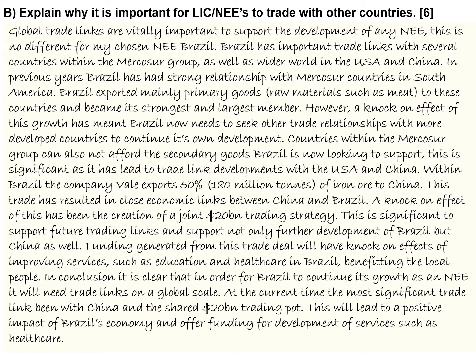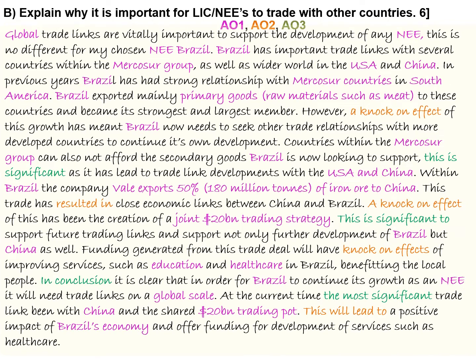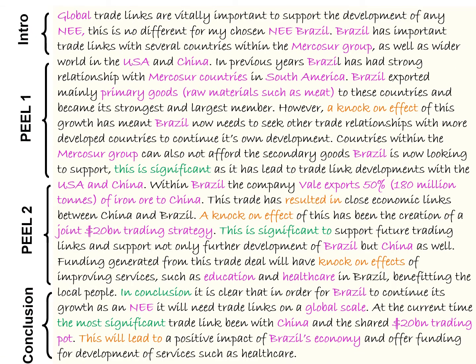In conclusion, it's clear that in order for Brazil to continue its growth as an NEE, it will need trade links on a global scale. At the current time, the most significant trade link is between Brazil and China — the shared 20 billion pound trading pot — which will lead to a positive impact on Brazil's economy and offer funding for development of services such as healthcare. Here we can see the AO1s in pink, AO2s in orange, AO3s in green — lots of data, examples, place names, development language, and significance markers throughout. You can see the introduction, PEEL paragraph one, PEEL paragraph two, and the conclusion.